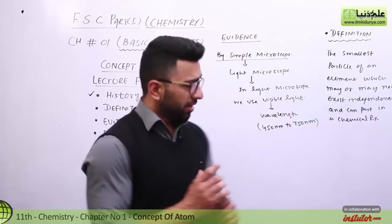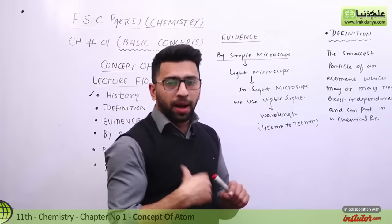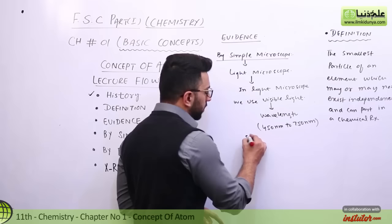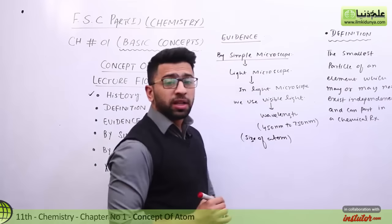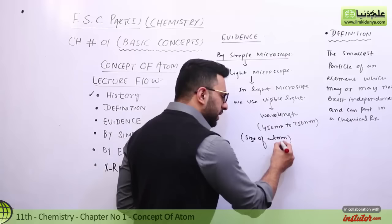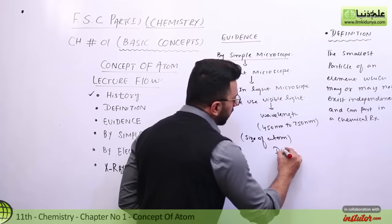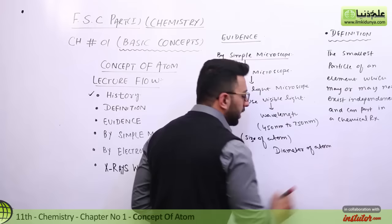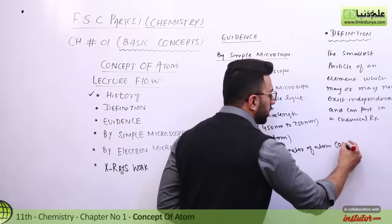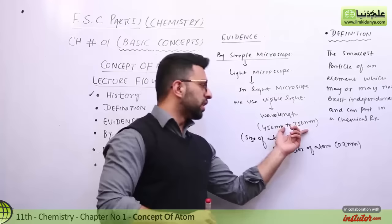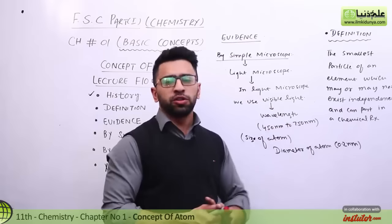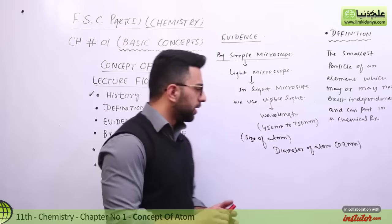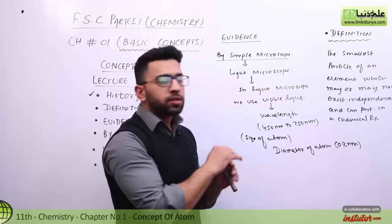The wavelength of visible light is 450 to 750 nanometers, but the size of an atom is very small. The diameter of an atom is approximately 0.2 nanometers. There is a huge difference between 450–750 nanometers and 0.2 nanometers, and this is why we cannot see atoms using a light microscope.